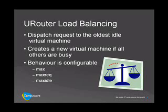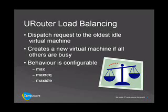If all processes are busy at the time of a new request, then the U-Router will create a new virtual machine and dispatch the request to the new process. A virtual machine is considered busy if it has an open transaction, hit list, or is currently executing proc code. The behaviour of the load balancing is configurable through settings such as max, max requests, and max idle. Max sets the maximum number of processes that can be created. If the maximum number has been created when all virtual machines are busy, the router will queue the requests until a virtual machine becomes free. Max requests sets the maximum number of requests a virtual machine will process before shutting down, and max idle sets the maximum time a process may remain idle before shutting down.